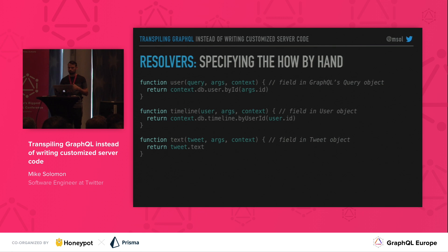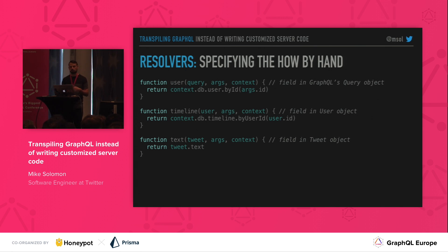The implementation is pretty straightforward: we look in our context, access the user database, and by ID we look up a user using the argument we got. We also have a couple more resolvers that do similar things. For timelines, we use the user ID to look up a timeline in a different database containing the timeline and tweet objects. And for the text field, we can just pull it off of the parent object, which is just a tweet.